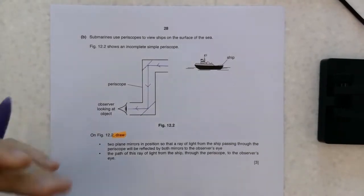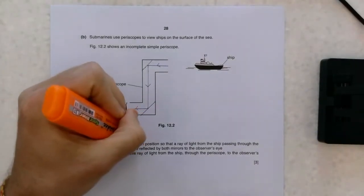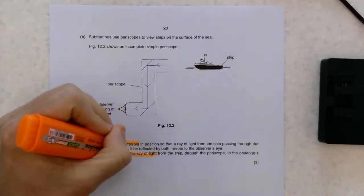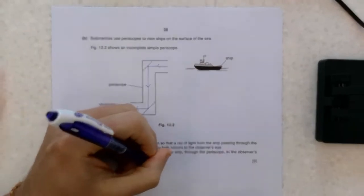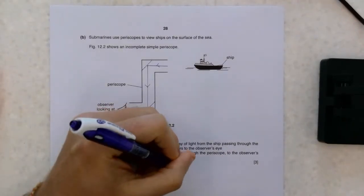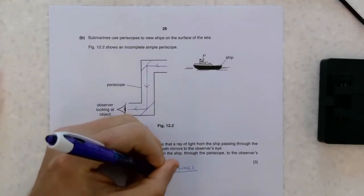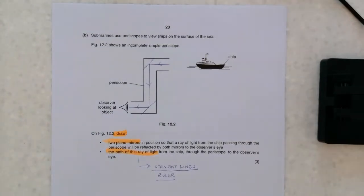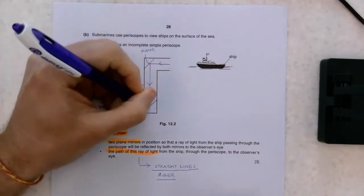A couple of things to look for. You need to draw two plain mirrors. I think we can probably just about do that. And you need to draw the path of the light. Making sure that when you're drawing the light, you are using straight lines. So, therefore, use a ruler. We've talked about this a few times and I think you think I'm just being annoying. But if you don't use a ruler here, you will lose marks.